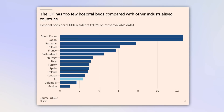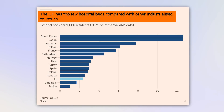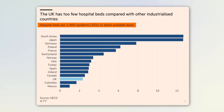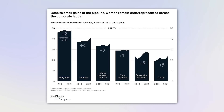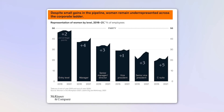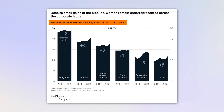Looking at more real-world examples: the Financial Times makes it very clear in the title — 'The UK has too few hospital beds compared to other industrialized countries' — with the subtitle describing the chart data. Similarly, a McKinsey chart says 'Despite some gains in the pipeline, women remain underrepresented across the corporate ladder,' with the subtitle describing the chart in more detail.